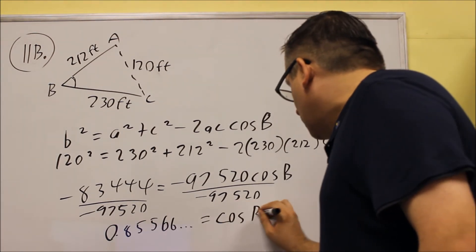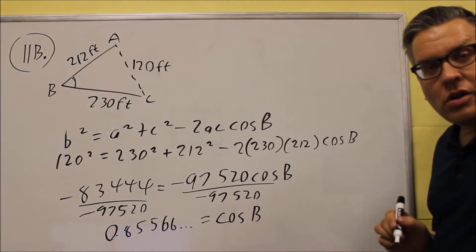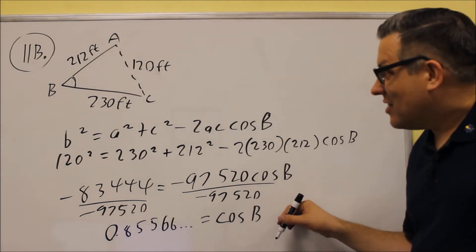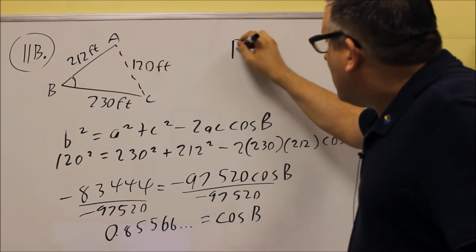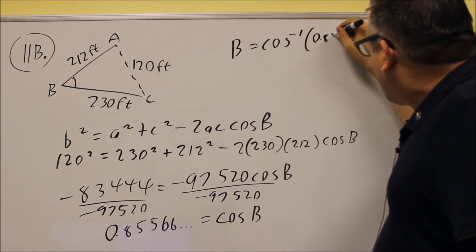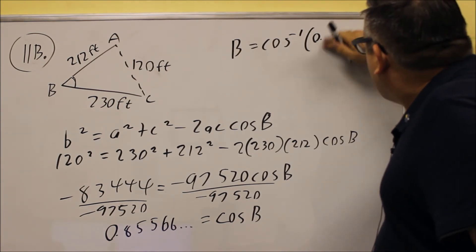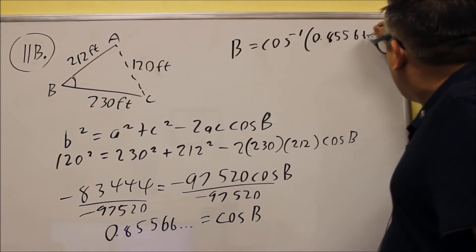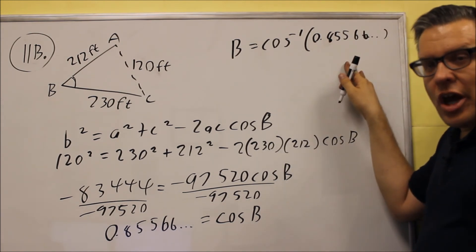That's going to equal cosines B. Remember that your answer, you have to take the inverse cosines of both sides. So, your answer for B is going to be the inverse cosines of that decimal, 0.858. Should I get the decimal right? 85566 with some more decimals.